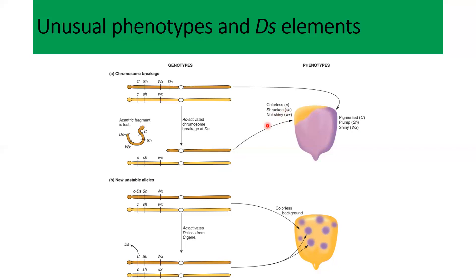To summarize: when the dominant alleles are present, the seed is pigmented, plump, and shiny. When these dominant forms are broken and separated from the chromosome and only recessive forms remain, they give rise to colorless, shrunken, and non-shiny seeds.